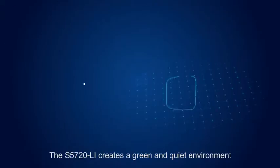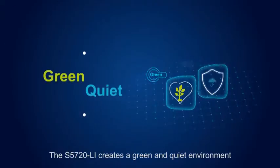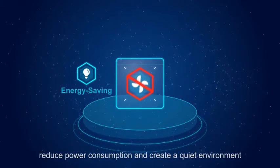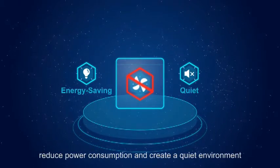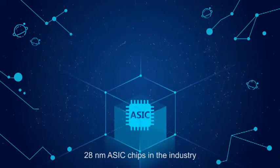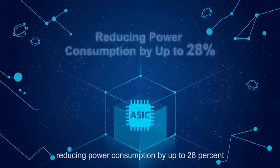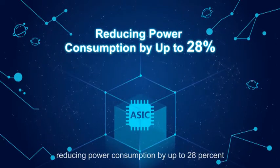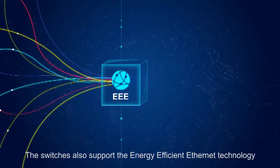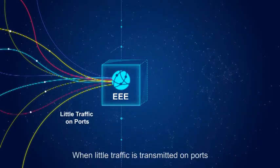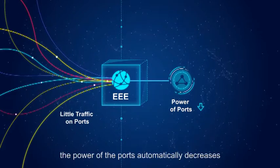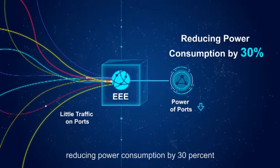The S5720 Li creates a green and quiet environment. Switch models with no fans are provided to reduce power consumption and create a quiet environment. The switches are equipped with the latest 28 nanometer ASIC chips in the industry, reducing power consumption by up to 28%. The switches also support energy-efficient Ethernet technology, and when little traffic is transmitted on ports, the power of the ports automatically decreases, reducing power consumption by 30%.